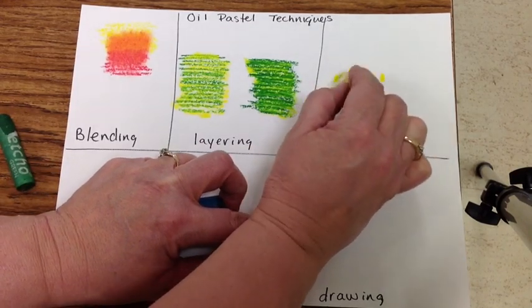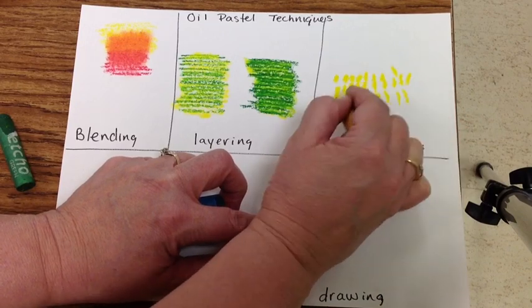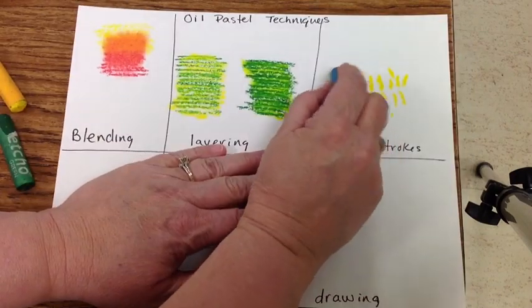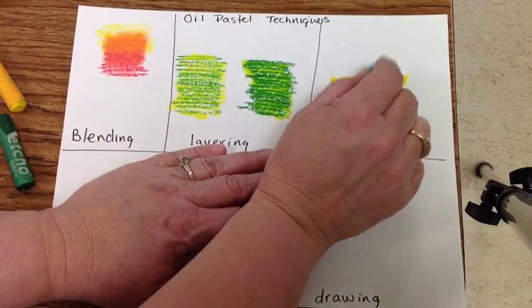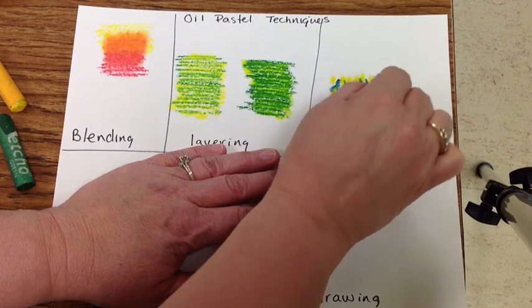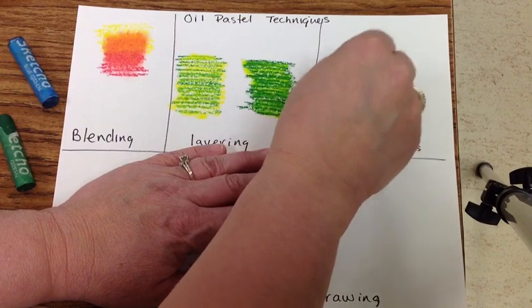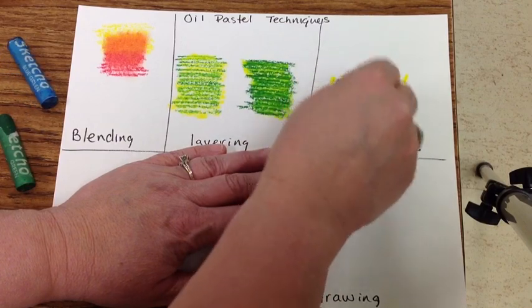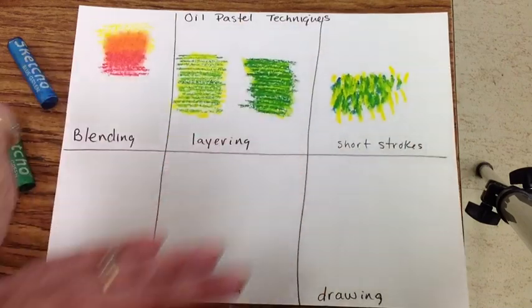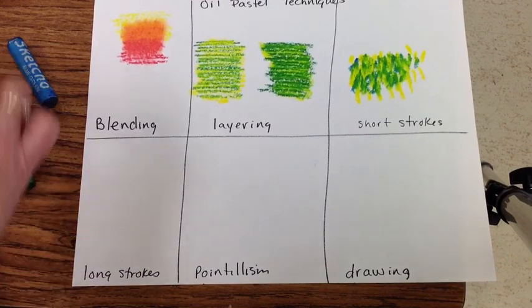The next technique is short stroke. I'm doing quick little strokes to fill in an area, maybe like for grass. Now I'm using blue instead of green, going in between, trying to eventually fill in all the white area, but only with short little strokes. Now I'm using yellow again. Short, small, quick strokes to achieve the short stroke technique, instead of just coloring in and assigning color to an area.